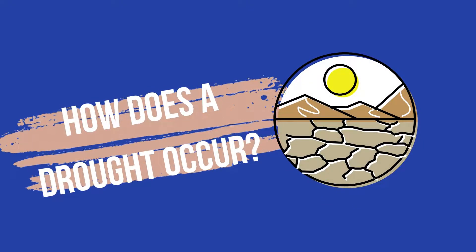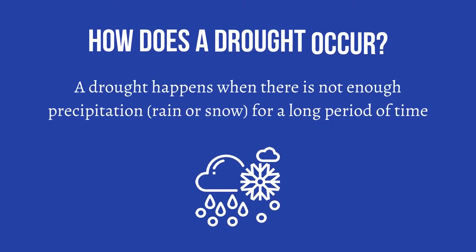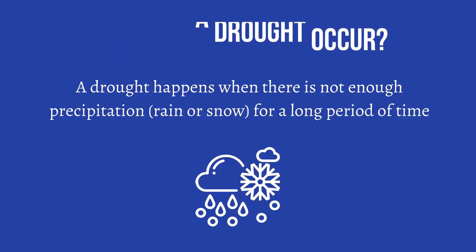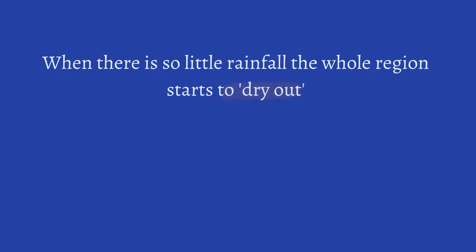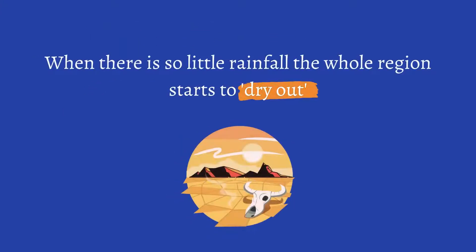How does a drought occur? A drought happens when there is not enough precipitation, rain or snow, for a long period of time. When there is so little rainfall, the whole region starts to dry out.